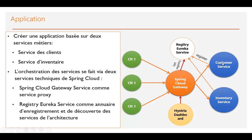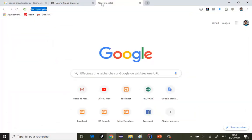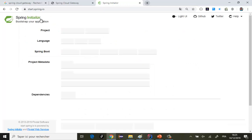Alors, pour la procédure, je commencerai d'abord par la création des deux microservices métier. Pour créer le premier, je vais directement passer vers le site start.spring.io et après je vais créer le projet.